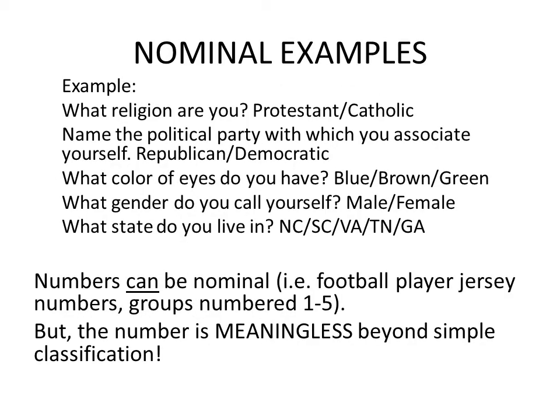Examples of nominal variables include religion (Protestant or Catholic), political party affiliation (Republican or Democrat), and eye color (blue, brown, green). Notice that you are only allowed to choose one characteristic. Also, numbers can be nominal — for example, a football player's jersey number. Cam Newton's jersey number one does not indicate order; it is simply a label and is meaningless beyond simple classification.